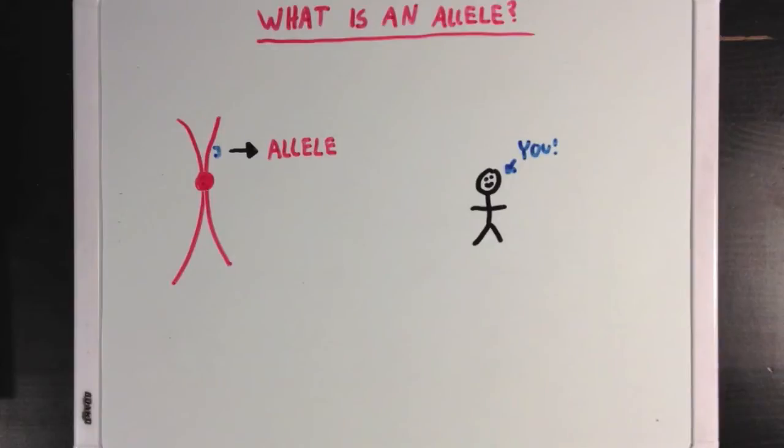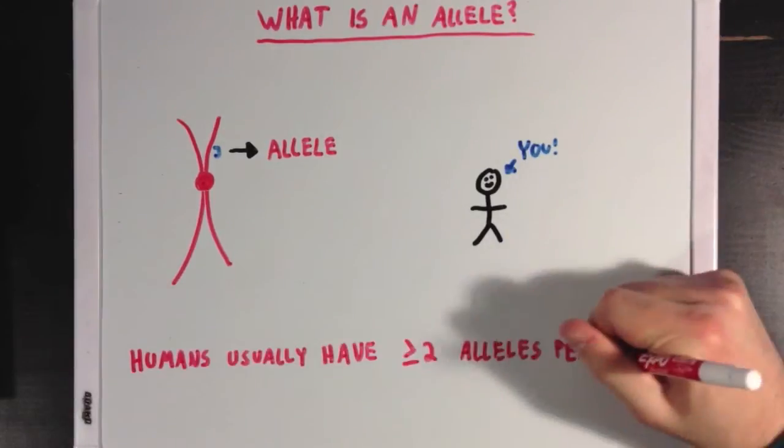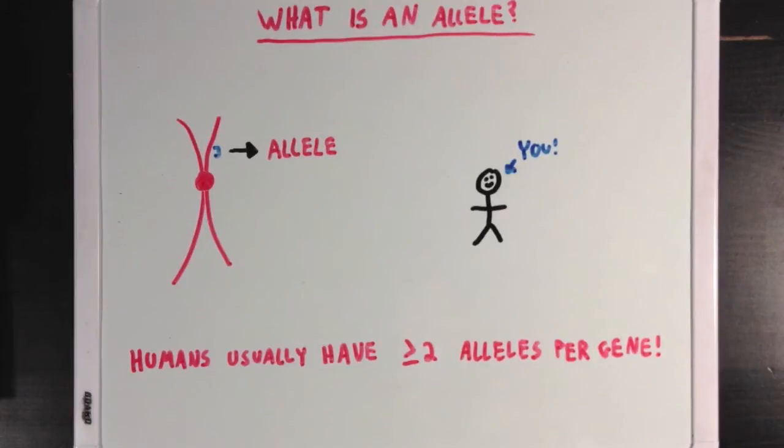Now since humans have at least two copies of each chromosome, we can say that humans usually have at least two alleles for every specific gene, one allele from their mother and one from their father.